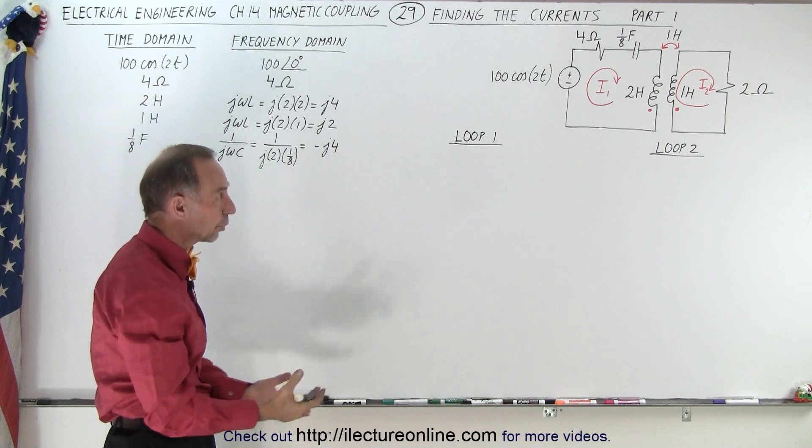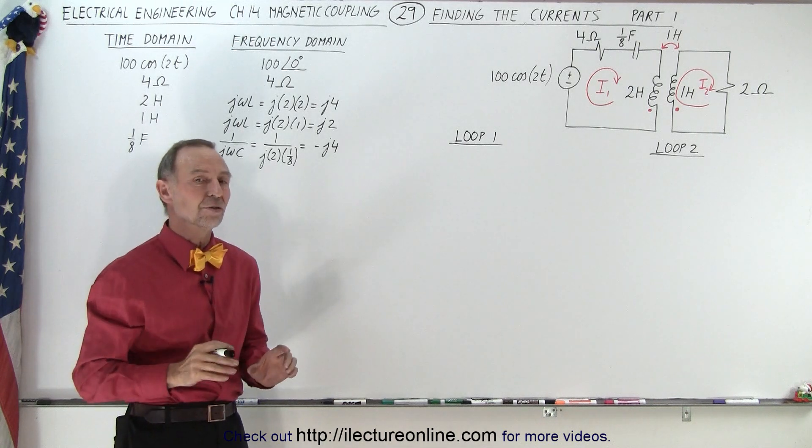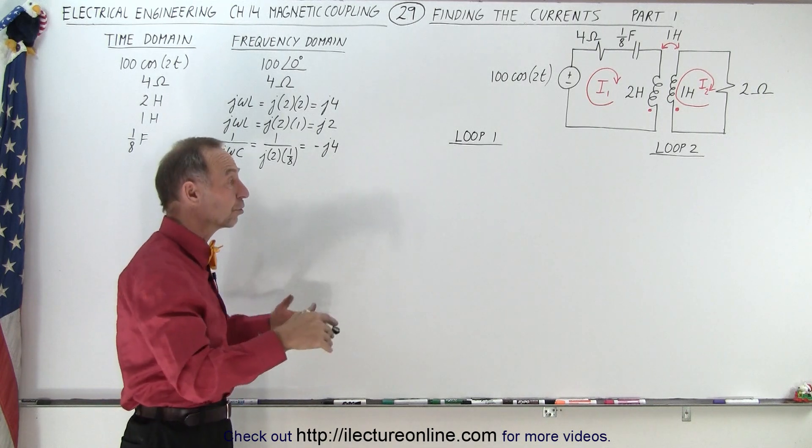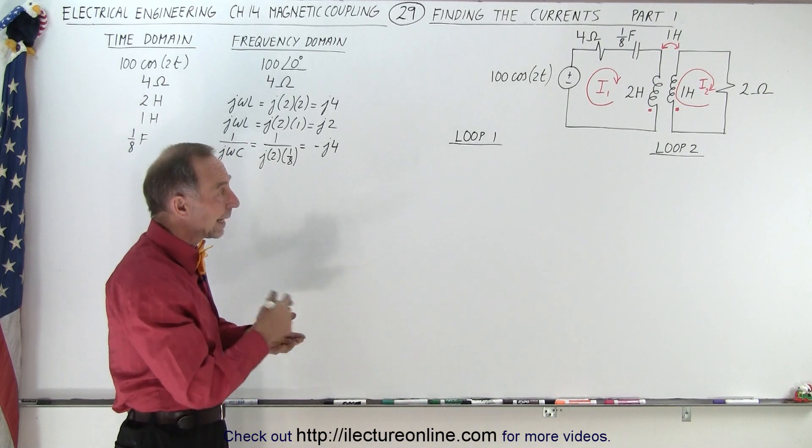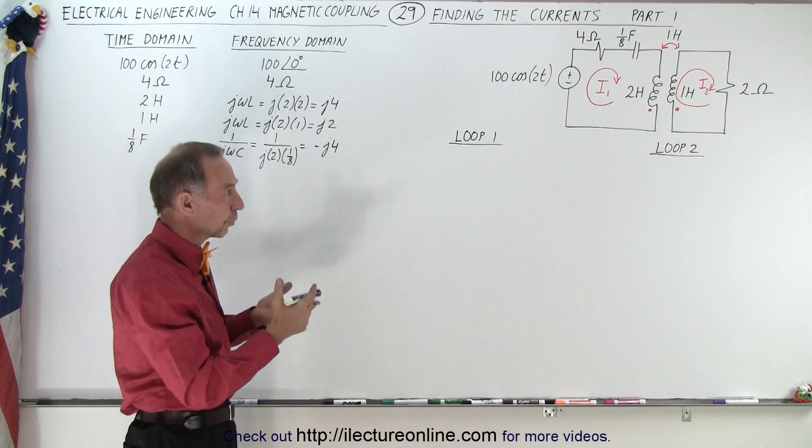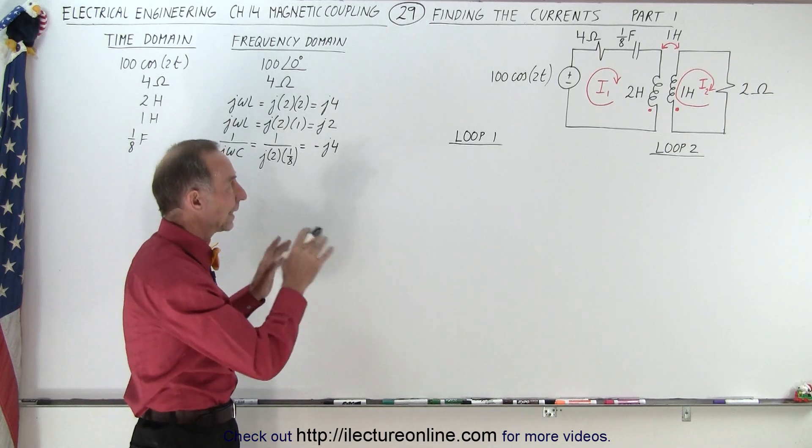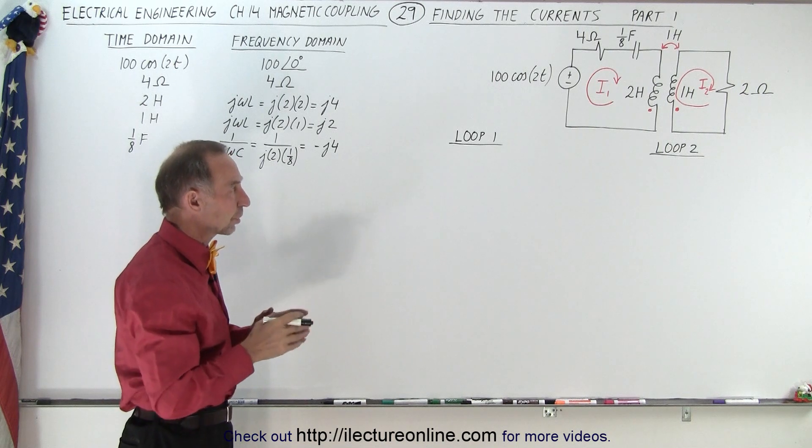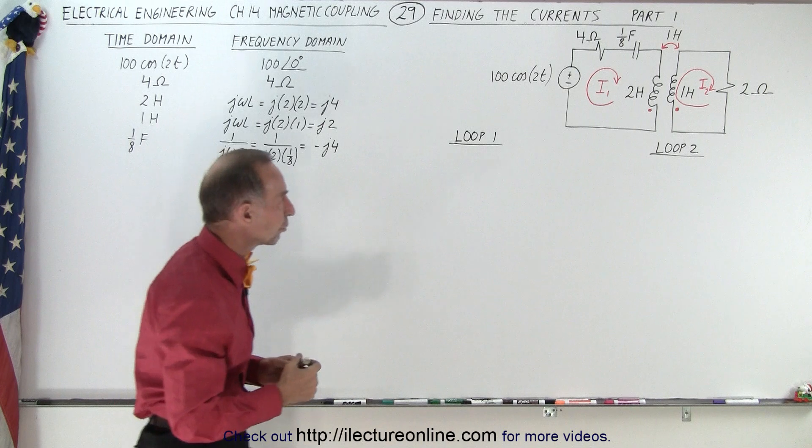We're going to go around each loop, add up all the voltage rises and all the voltage drops, so we end up with two equations. Then in the next video we're going to solve that using the matrix method or the determinant method. And then on the final go around, on the third video, we're going to show you how to find the energy stored in the circuit at a particular moment in time. So let's first find the two equations for the loops.